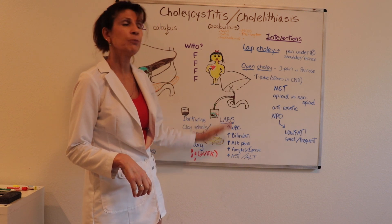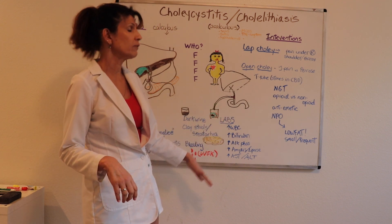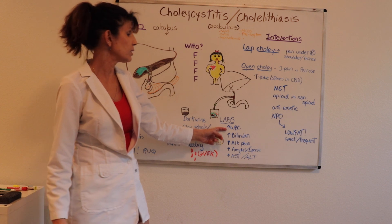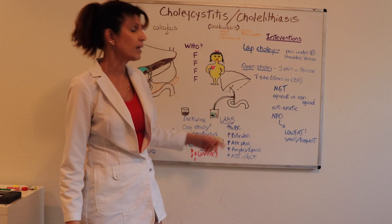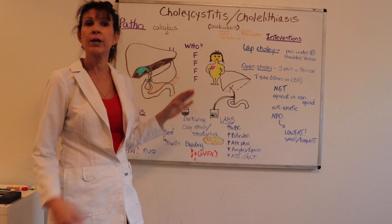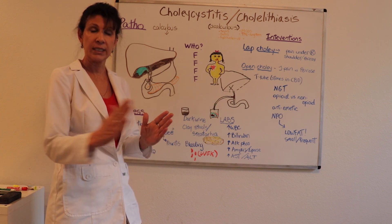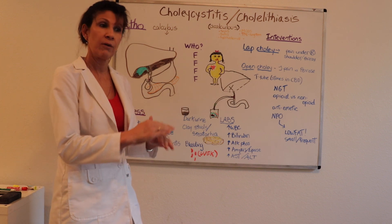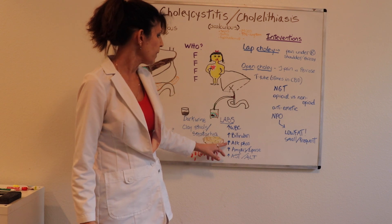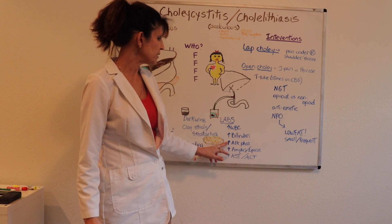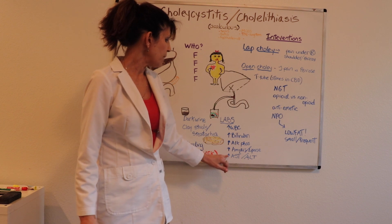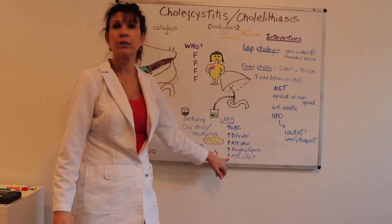In evaluation of labs, you may see some or all of the following elevated: leukocytosis or elevated white blood cell count, and elevated bilirubin levels — which can range from mildly to very elevated. Other non-specific findings include elevated alkaline phosphatase, AST, and ALT, which are the liver function tests also called SGOT and SGPT.